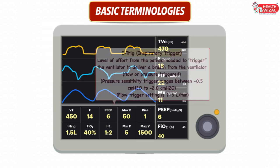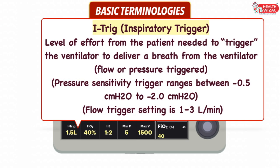Next is the inspiratory trigger, which is the level of effort from the patient needed to trigger the ventilator to deliver a breath. It may be either flow or pressure triggered; if not, it is time triggered. Normal pressure sensitivity trigger ranges between −0.5 to −2 cm of water, whereas normal flow sensitivity trigger ranges between 1 to 3 liters per minute.